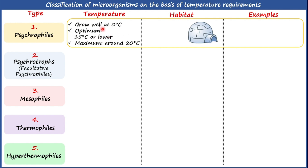The optimum temperature for a particular type of microorganism is the temperature at which that microorganism has the shortest generation time — in other words, at optimum temperature a specific microorganism shows the maximum rate of multiplication. For psychrophilic microorganisms, the maximum temperature is around 20°C.